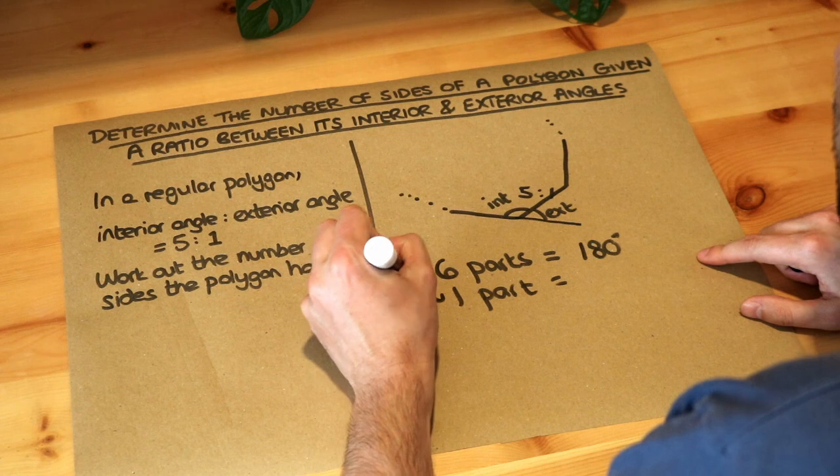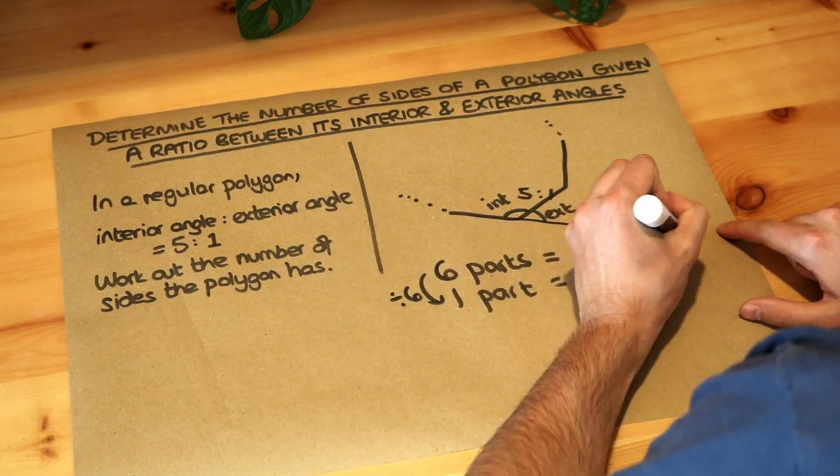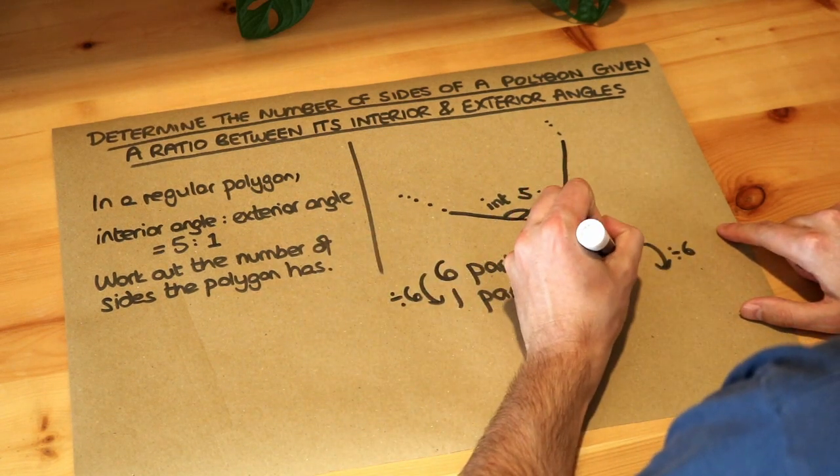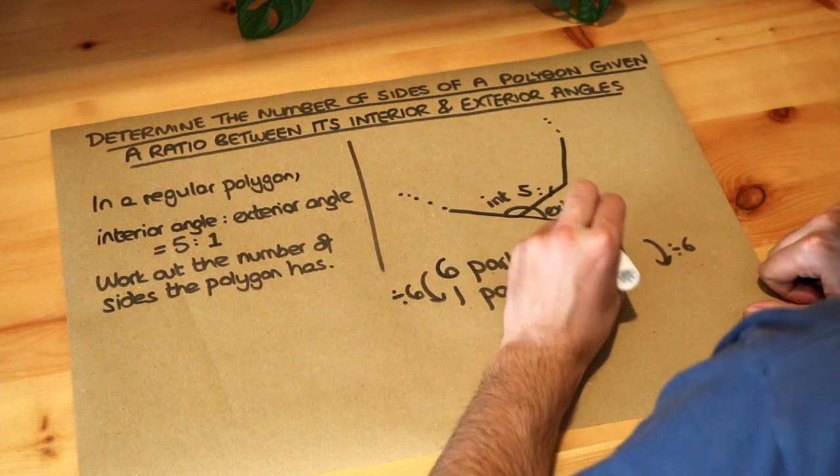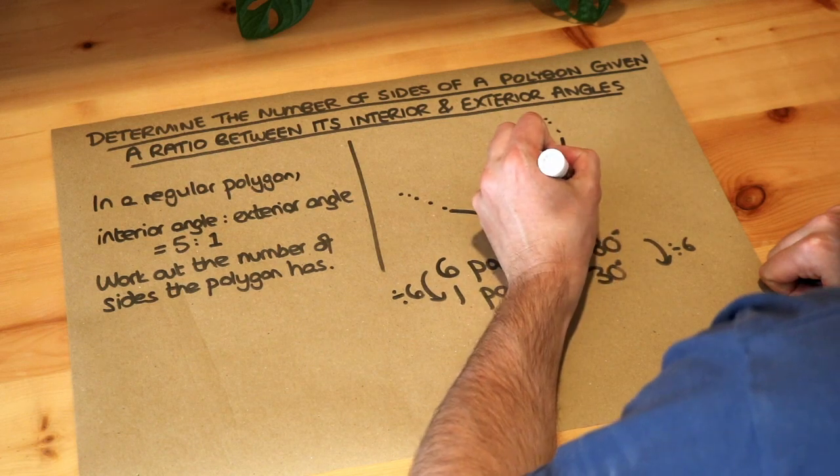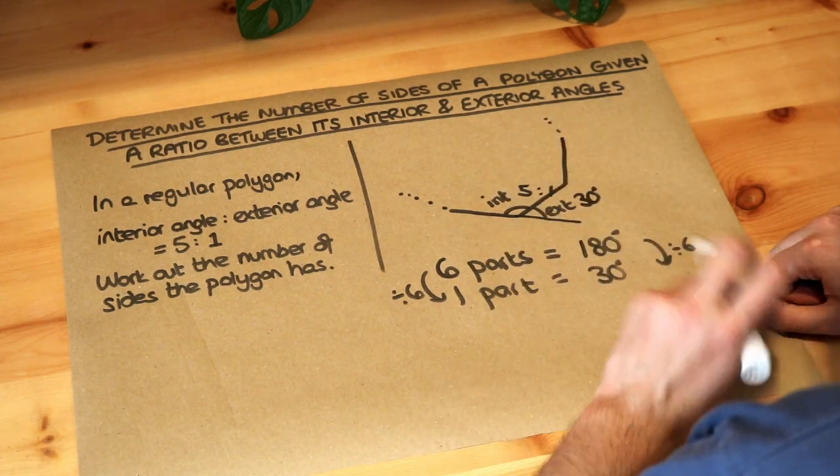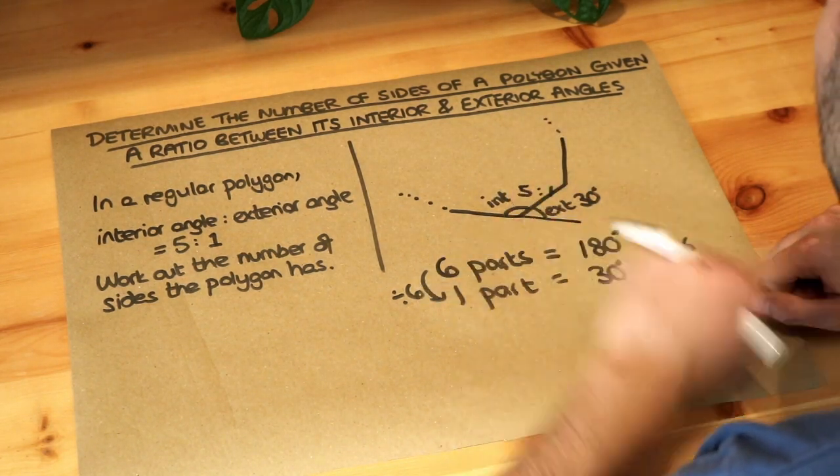So we know that one part is worth 30 degrees. That means this exterior angle, which is the one part, is 30 degrees, and the interior angle - not that we need it - would be 150 degrees.